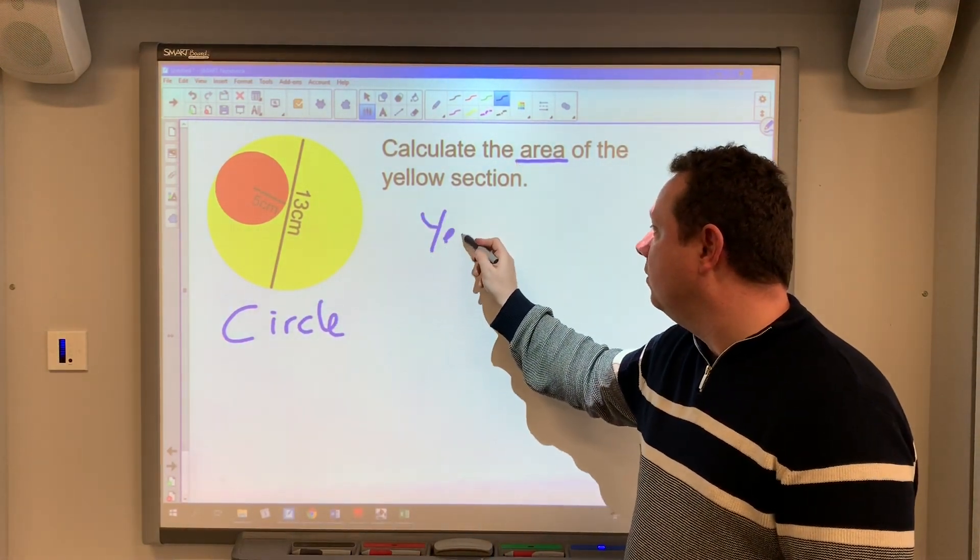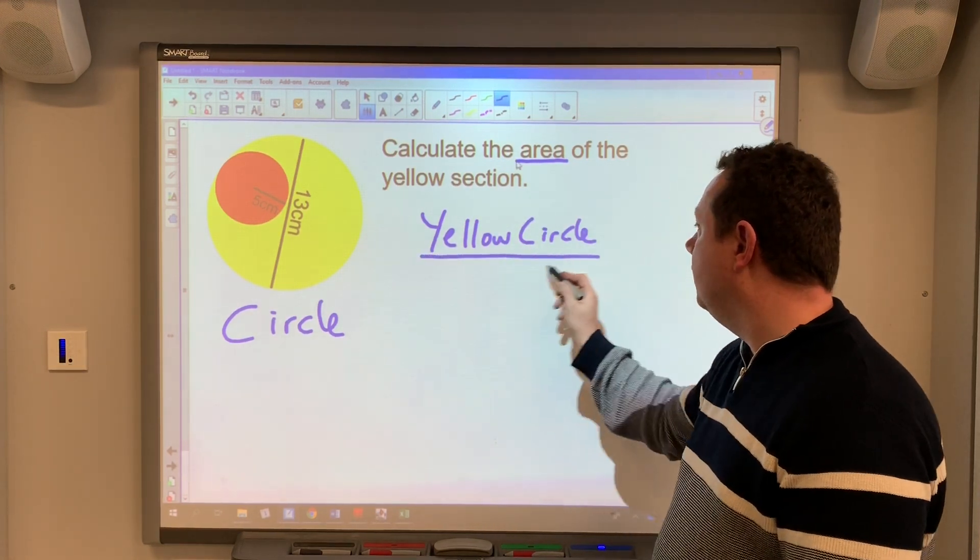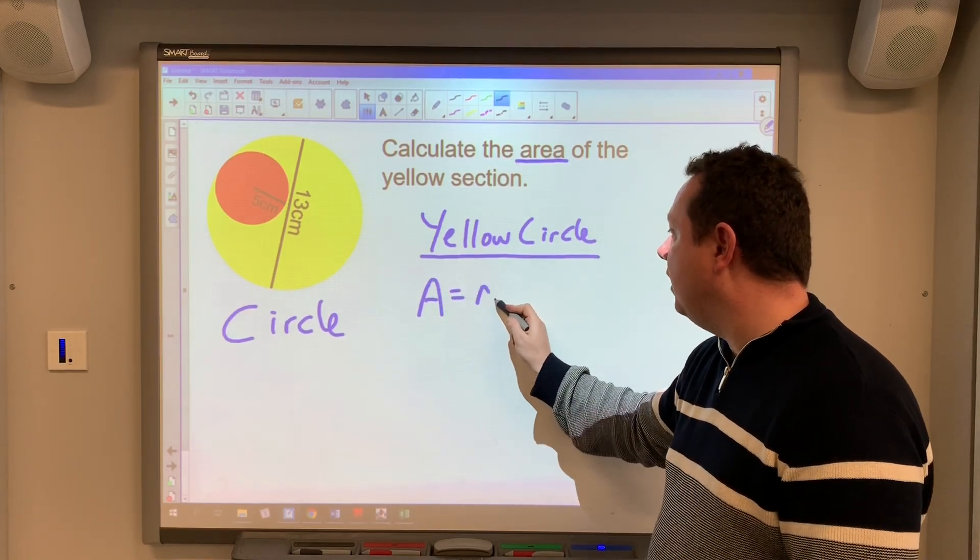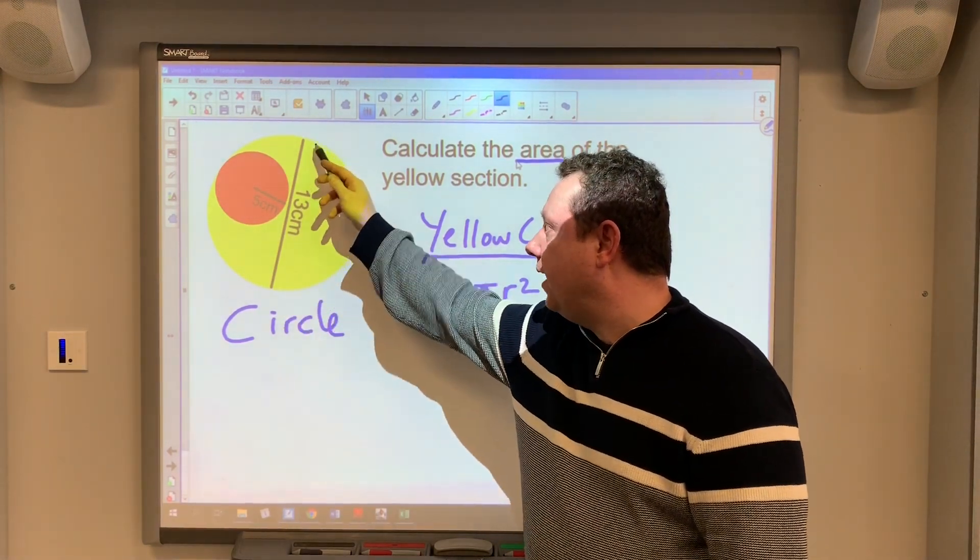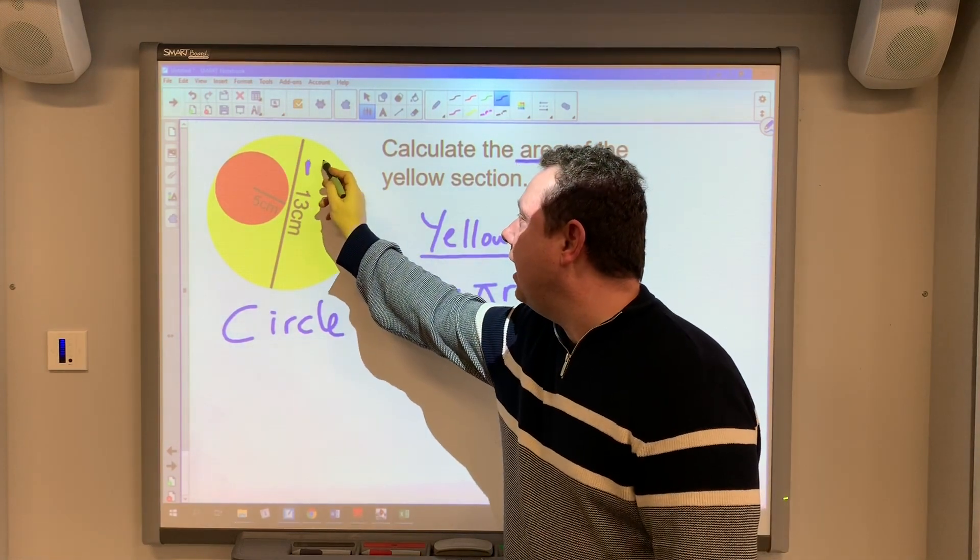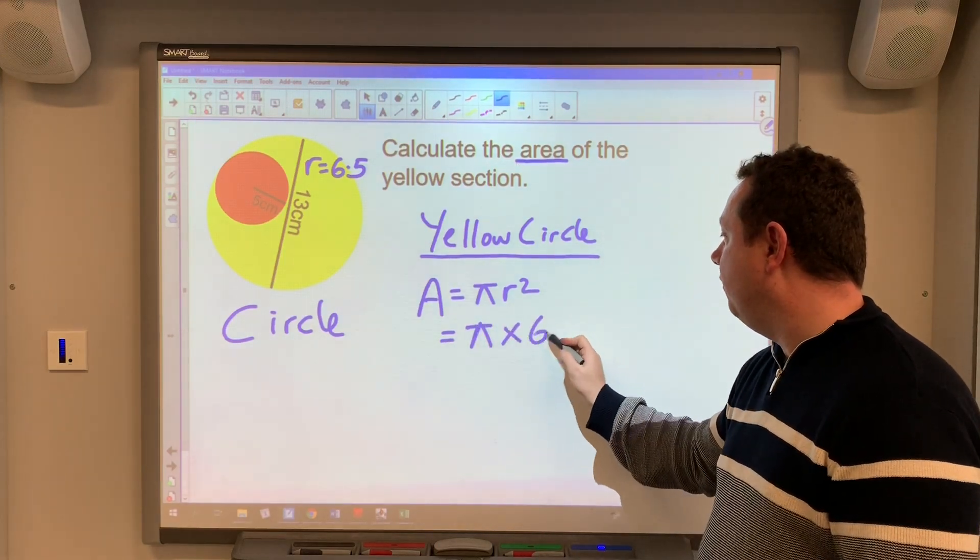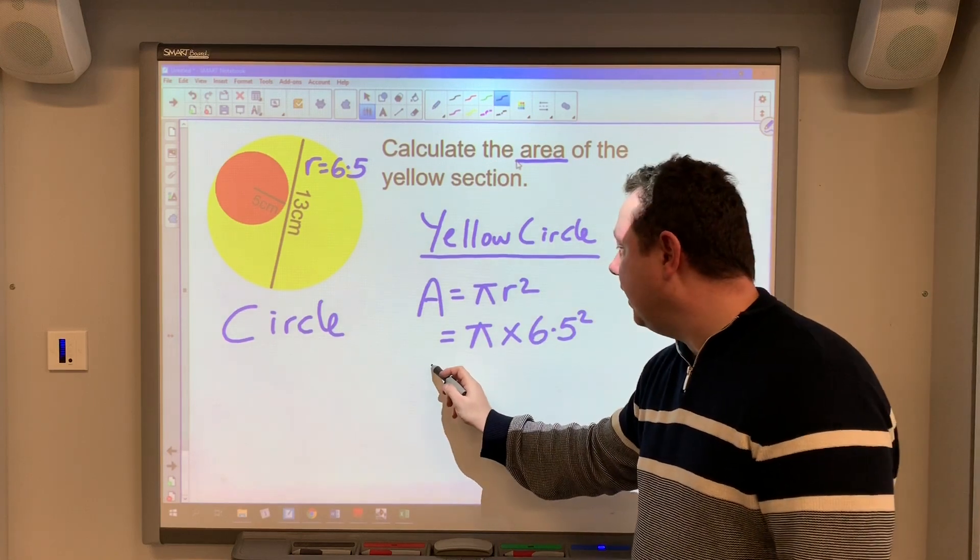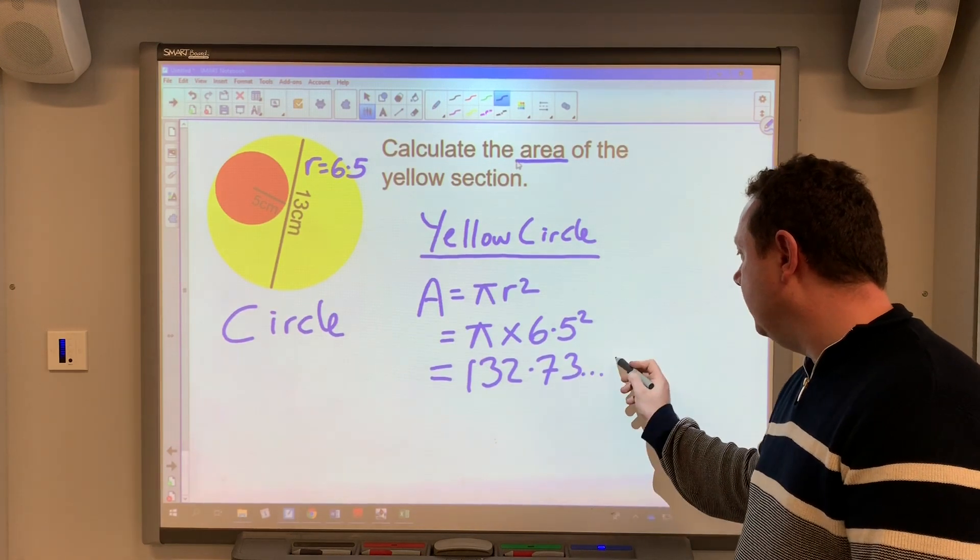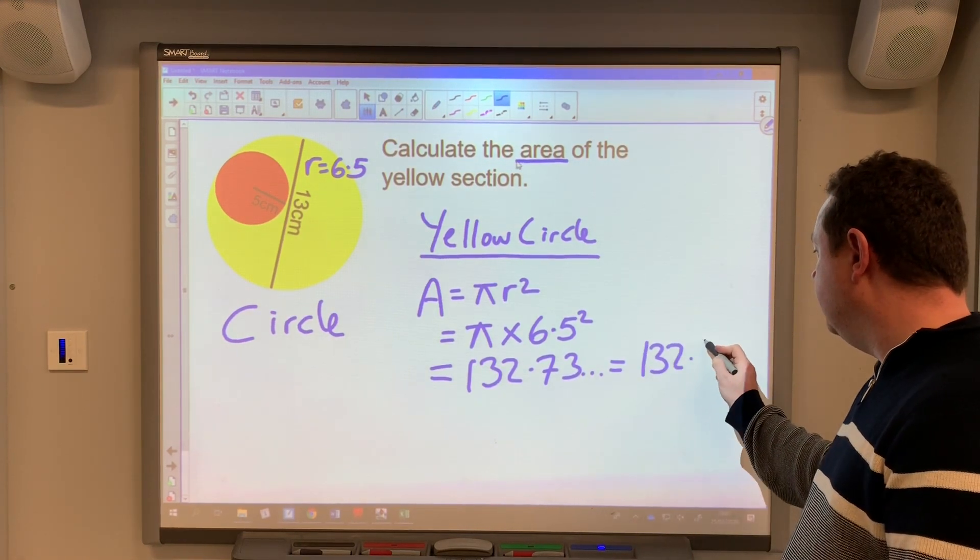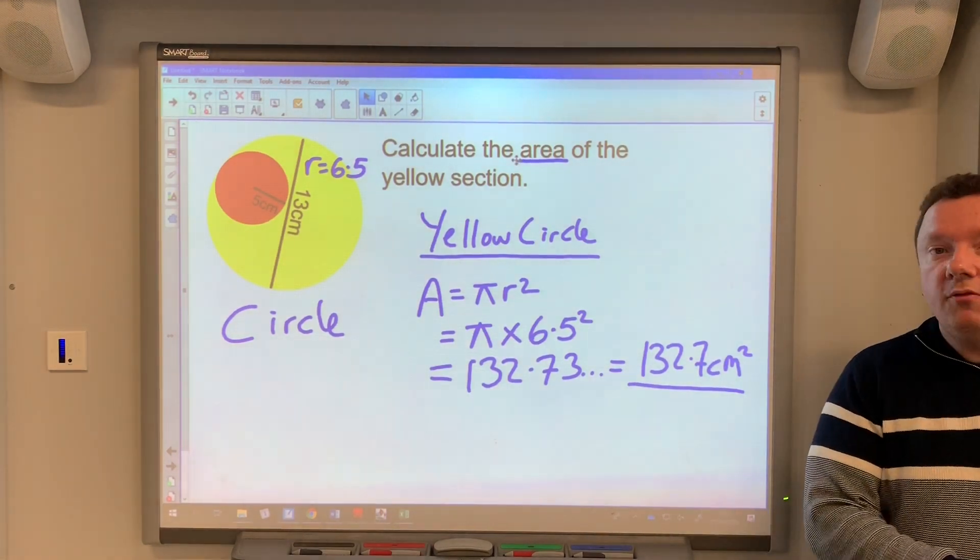So starting off with the yellow circle. I always write down my formula. A equals pi r squared. But there's no r. So you can see here the diameter is 13. So the radius for this is half of that which is 6.5. So I've got pi times 6.5 squared. Using a calculator to work that out, 132.73 which to one decimal place is 132.7. So I've now just worked out the area of the big yellow circle.